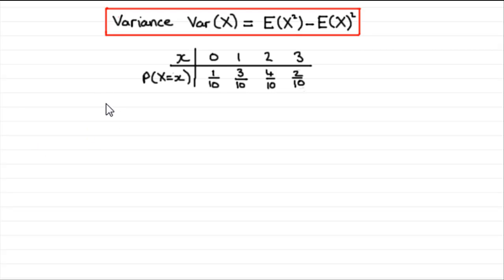In this tutorial, I'm going to show you that if we have a probability distribution table like the one we have here, then we can work out the variance of our random variable x. It's given by this formula: E(x²) minus E(x) all squared.